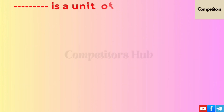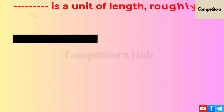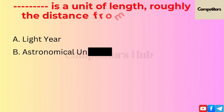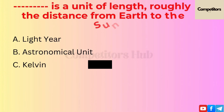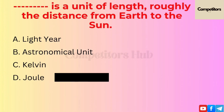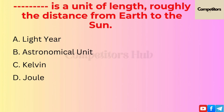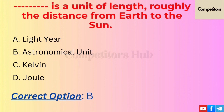The next question is: which is a unit of length roughly equal to the distance from Earth to Sun? Option A: Light year. Option B: Astronomical Unit. Option C: Kelvin. Option D: Joule. The correct option is B, Astronomical Unit.